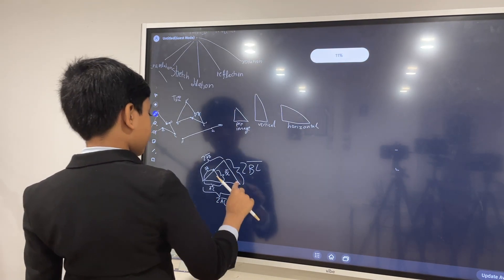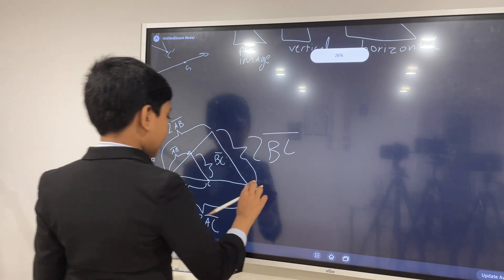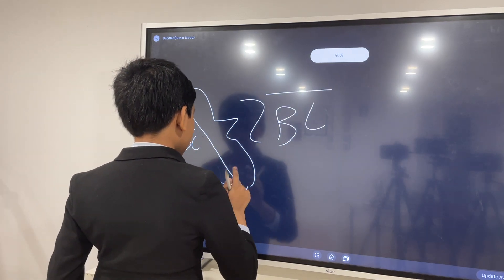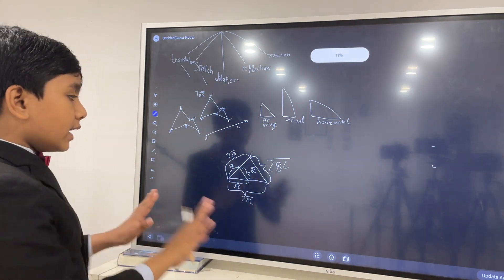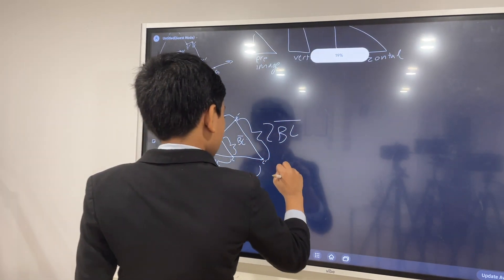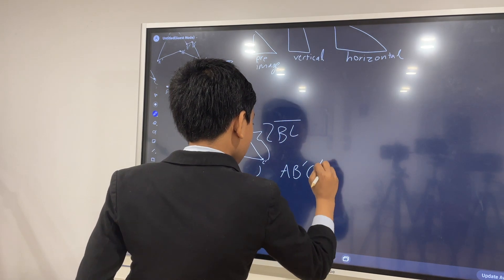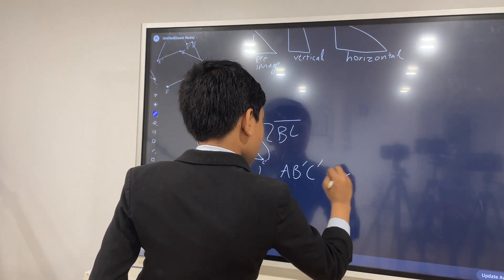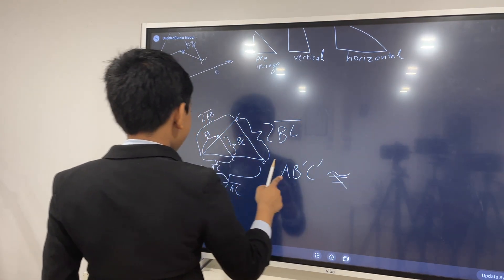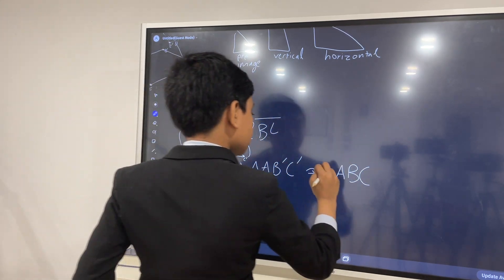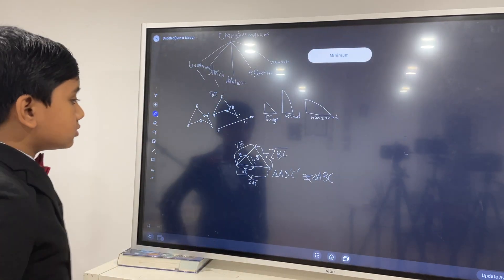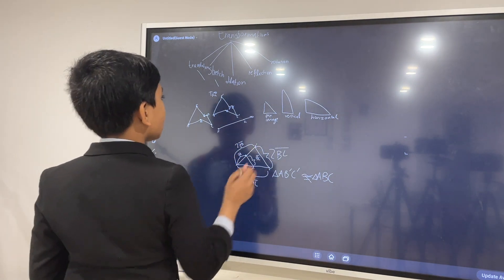So this is not a rigid motion. Meaning that, let's say, we may call this C prime and B prime. A, B prime, C prime is not congruent to just ABC. So that's because this is not a rigid motion.